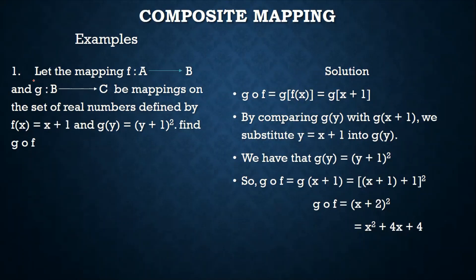Let's familiarize ourselves with the meaning of composite mapping using an example. Let the mapping f from set A to B and the function g from set B to C be defined on the set of real numbers by f(x) = x + 1, and g(y) = (y + 1)². We are asked to find g of f.